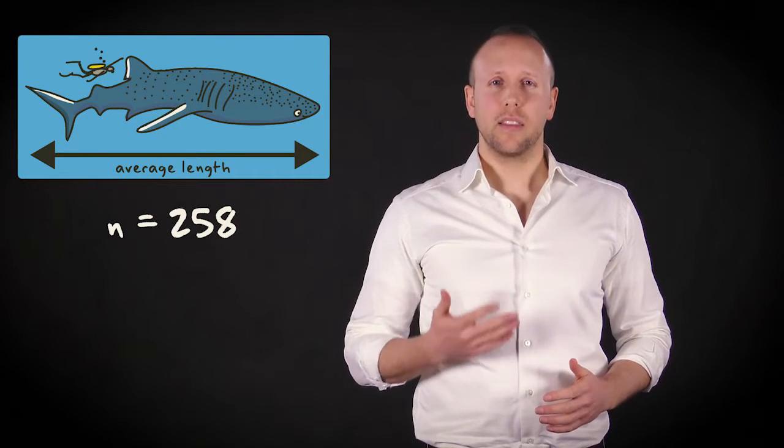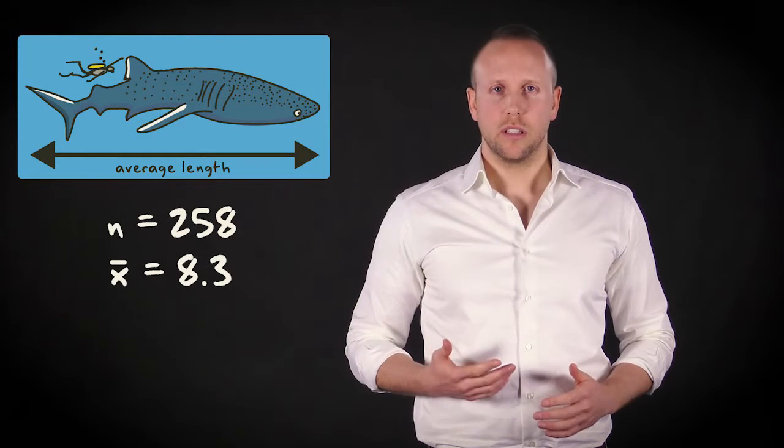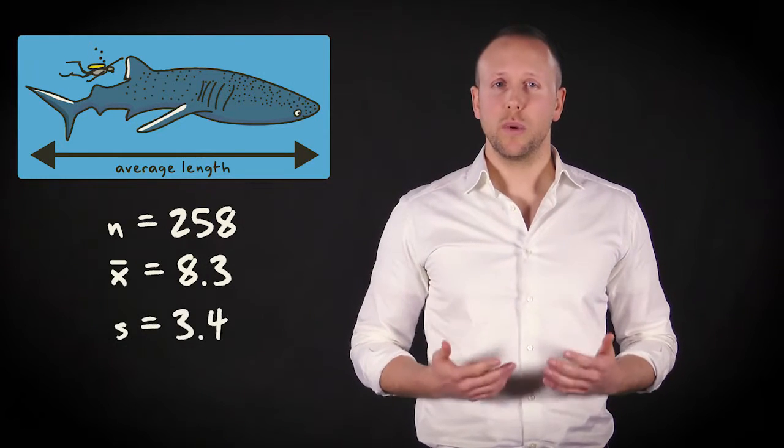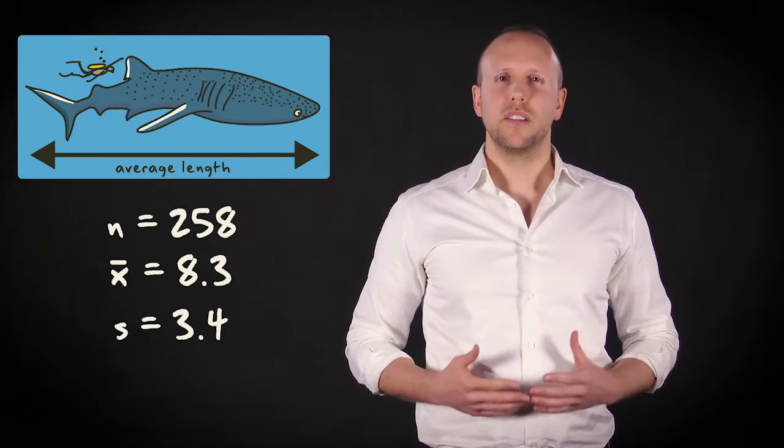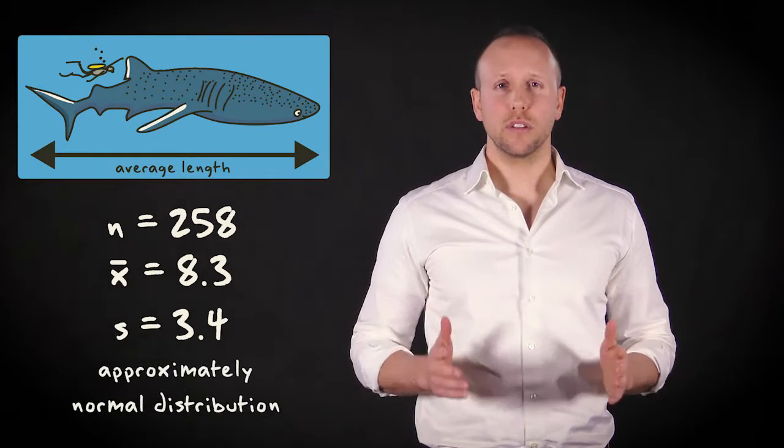It turns out that the mean length equals 8.3 meters. The sample standard deviation is 3.4 meters. It also turns out that the distribution of whale shark length is approximately normal.